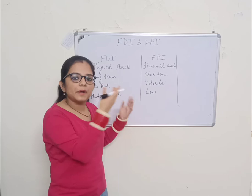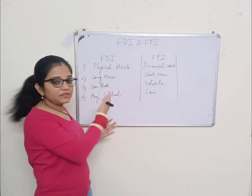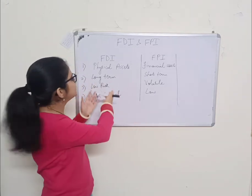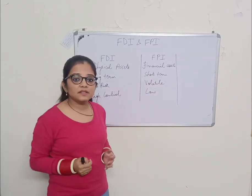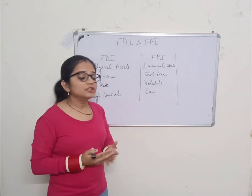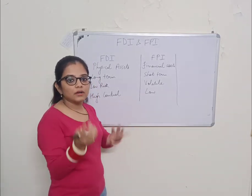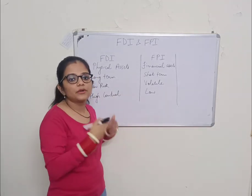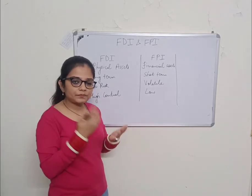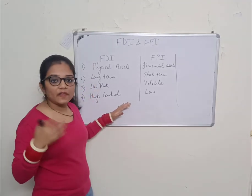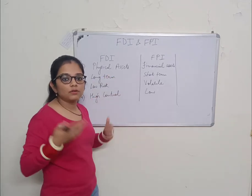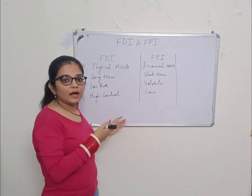You can do FDI through a joint venture, merger, acquisition, or by opening a subsidiary. For FPI, you may have heard of concepts called ADR and GDR — I have already made a video on ADR and GDR, you can check that out. There are also various other types of FDI like horizontal, vertical, and conglomerate — maybe I'll make a video on that soon.